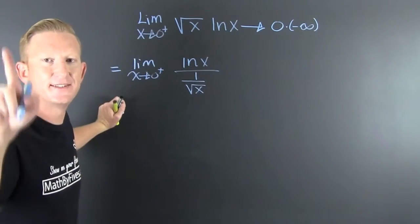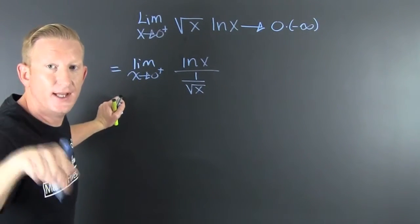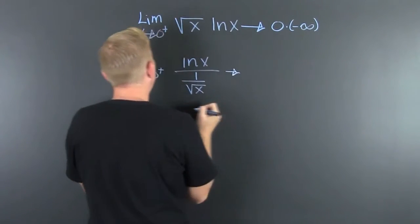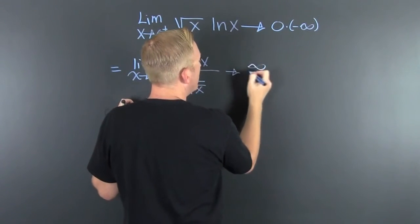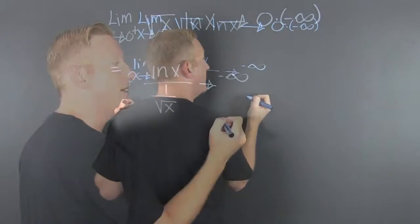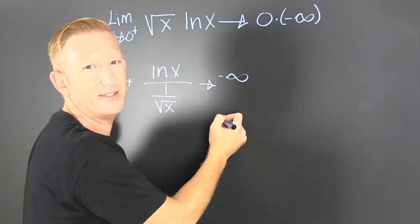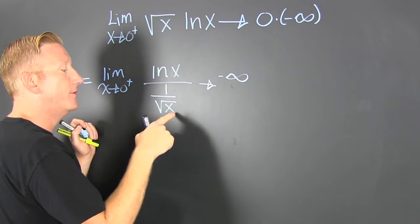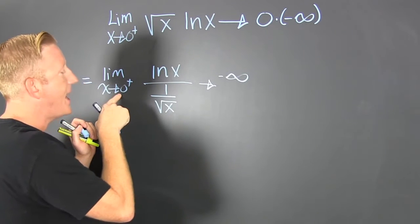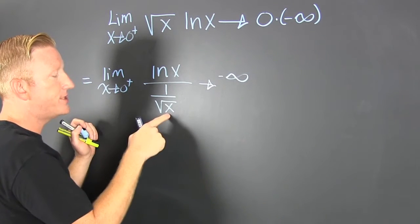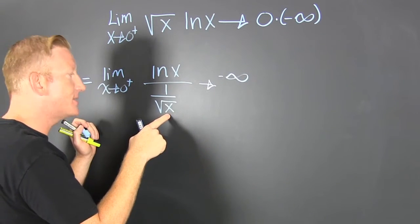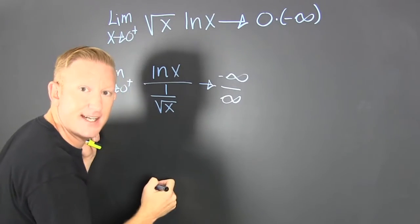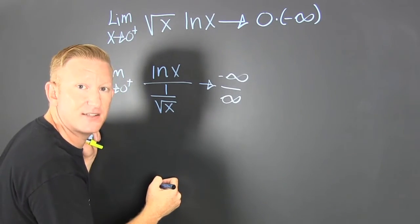What's next? Then we run the limit on that, and we see this is going to be negative infinity over that guy. But as x approaches zero, the denominator goes to infinity. And then it's in L'Hôpital's form.